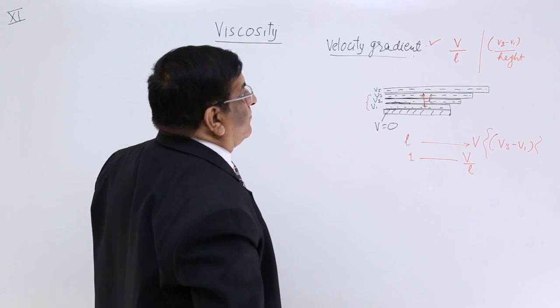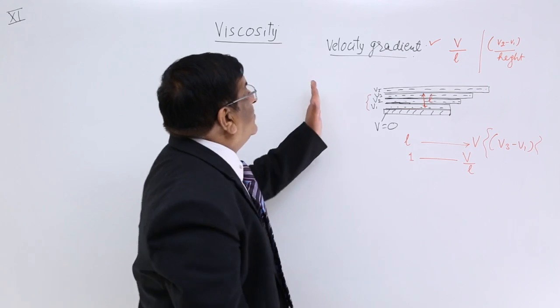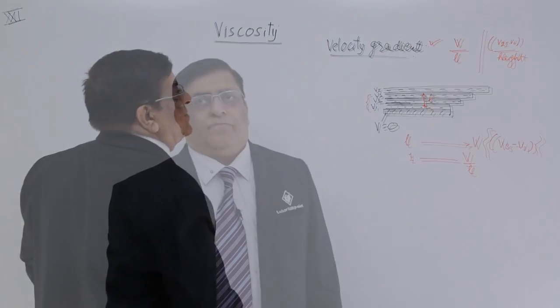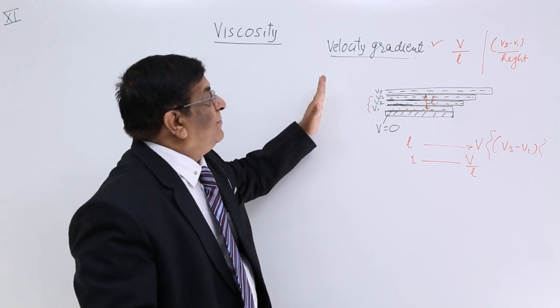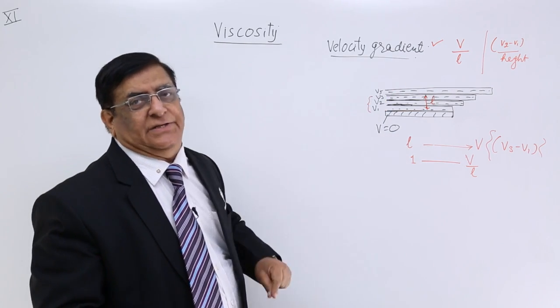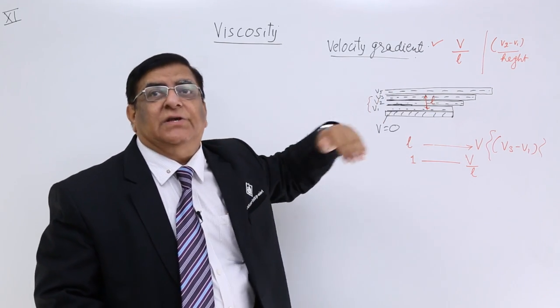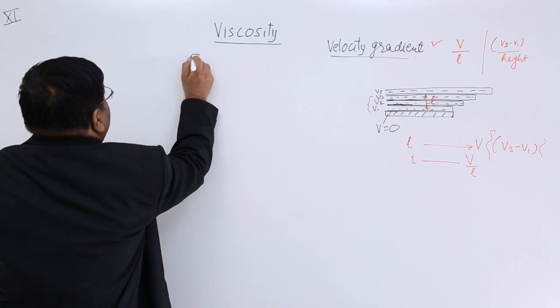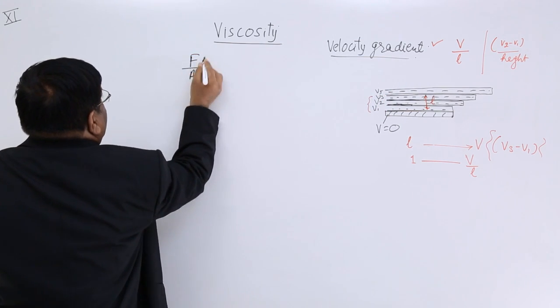Now we study how much pressure we apply here. So when we apply pressure here, the velocity increases. More is the pressure, more is the velocity, and more is the velocity gradient.